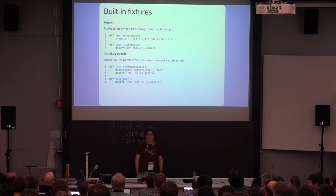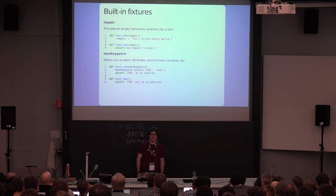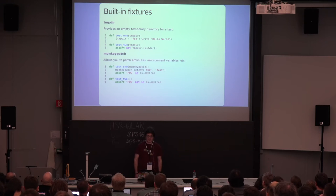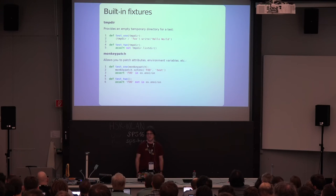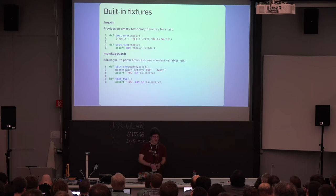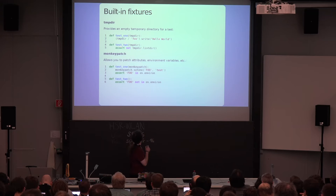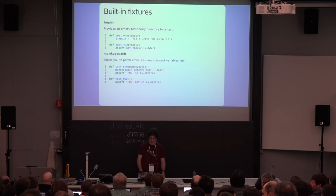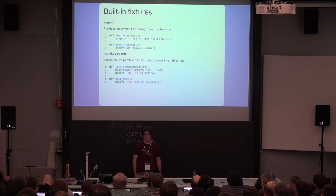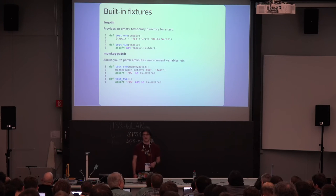There are some built-in fixtures. The most useful are tmpdir and monkeypatch. What tmpdir does is give you a clean, empty, temporary directory for your test, which is quite useful for integration tests. The API for tmpdir is basically like pathlib in Python 3.4 but has existed much longer — it's a py.path. You can use the division operator to join paths instead of os.path.join, and use a write method to simply open the file, write something to it, and close it.